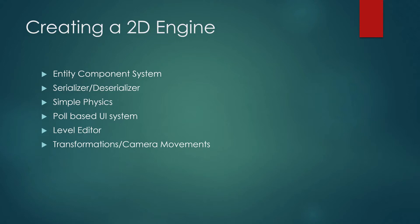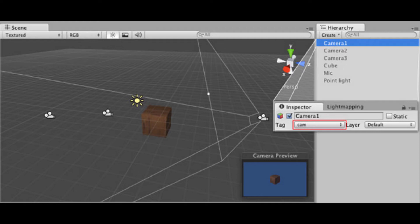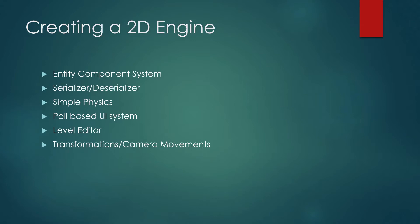Lastly, we'll cover transformations and camera movements. In the previous games we've done — Snake and Pong — you haven't had to worry about the camera moving. In this project, we're going to go over how to have a moving camera, how to render everything in its correct position on screen, and how to scale things like zooming the camera in and out. So that's a high-level overview of what we'll be covering throughout creating this 2D engine, and without further ado let's get started and get some boilerplate code out of the way.